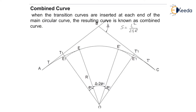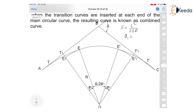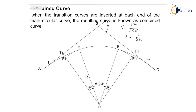Then calculate the spiral angle phi 1 from the formula: phi 1 = L upon 2R. By using this formula we can calculate the value of phi. After knowing phi 1, calculate the length of circular curve from the formula, and also check the result from the second formula.